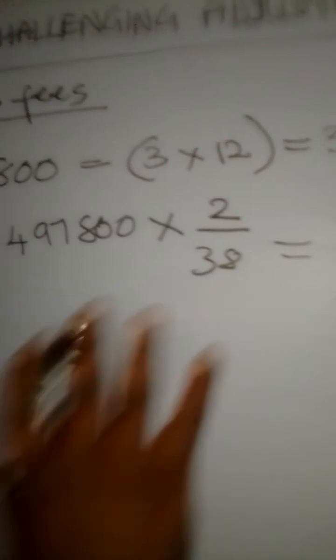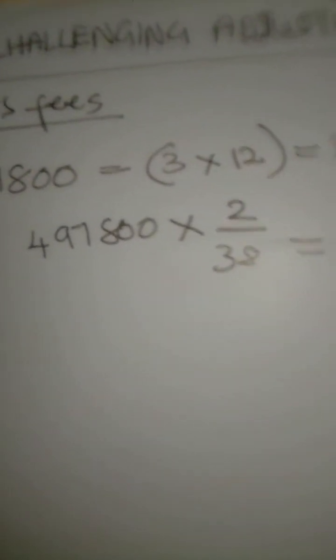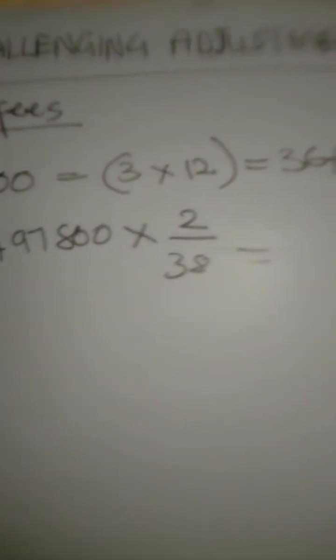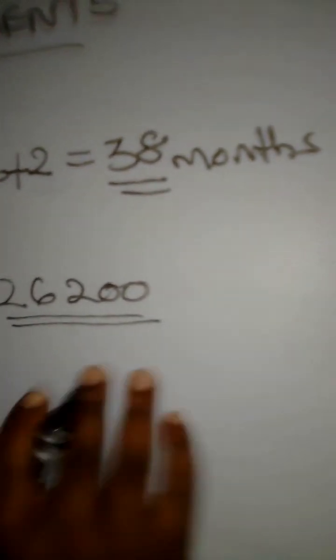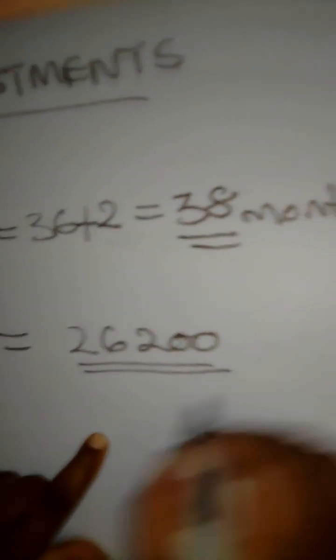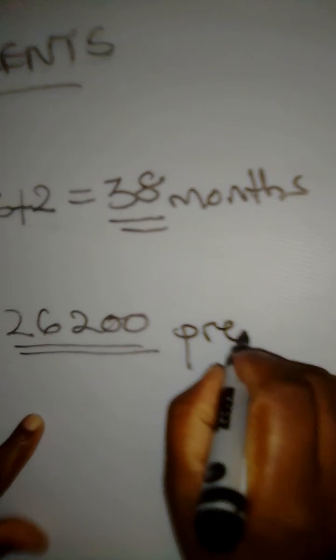So if you go to the calculator, you do this calculation, you are going to get something like $26,200. It is the money for the two months. So this $26,200 is indicating what? The prepaid expense.